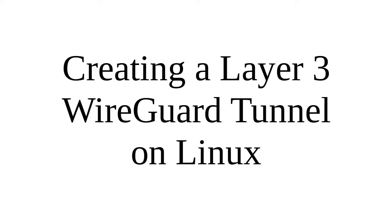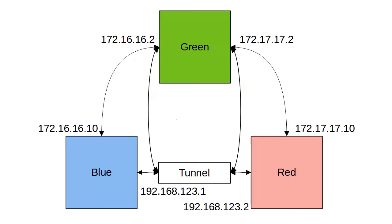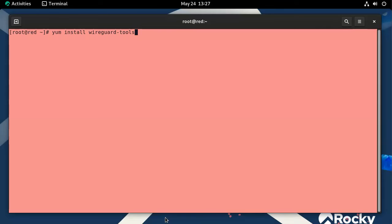Let's look at how to create a layer 3 WireGuard tunnel on Linux. I have a general network setup with the blue machine, the red machine, and a gateway — the green machine in between them. I'm going to be creating a virtual tunnel interface on both sides so the red and blue can communicate directly through WireGuard.